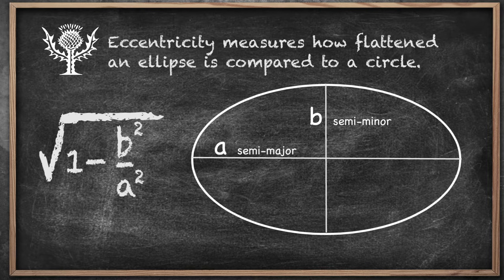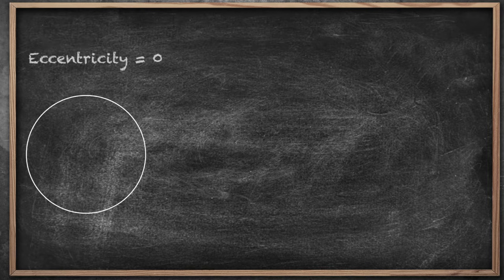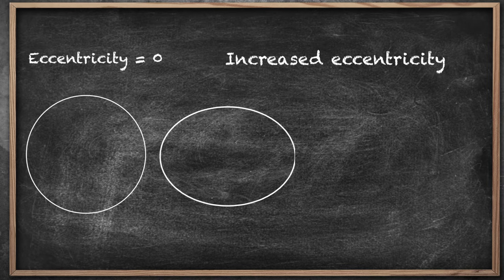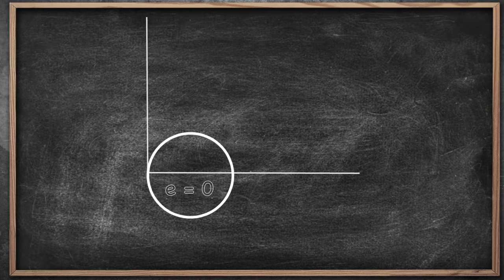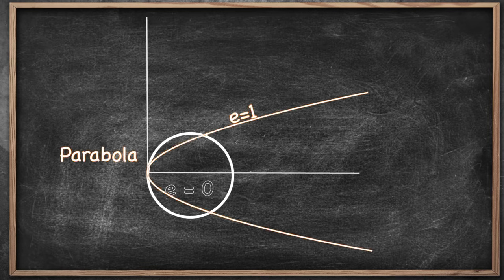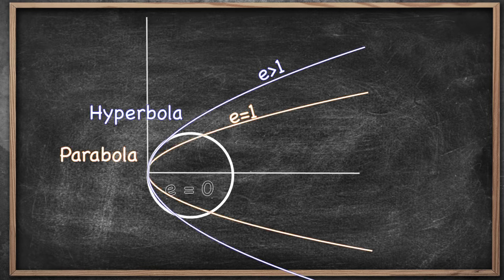The equation is a way to compare these axes to describe how squashed the ellipse is. An ellipse with zero eccentricity would just be a regular old circle. As eccentricity increases, the ellipse gets flatter and flatter until it just looks like a line. An orbit with an eccentricity equal to one is no longer an ellipse, but a parabola, or a hyperbola if E is greater than one.